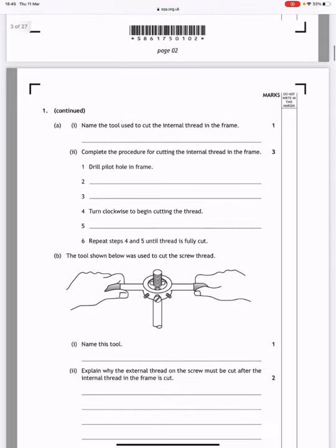Complete the procedure for cutting the internal thread in the frame. Drill a pilot hole in the frame, add lubricant to the tap, put the tap in the tap wrench, turn clockwise to begin cutting the thread, turn anti-clockwise to release the swarf. Repeat steps four and five until the thread is fully cut.